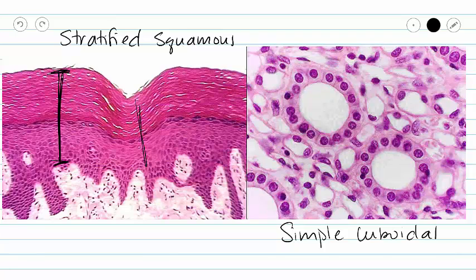In some places, it is shorter, and in some places, it is much taller. But all of that dark area is stratified. So stratified, again, means that we have multiple layers.